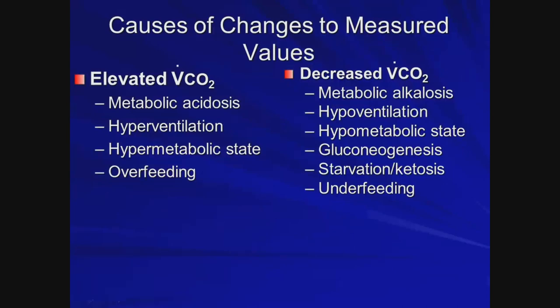Increased CO2 production occurs when you're in a hypermetabolic state producing more CO2. We also see this from overfeeding — using a standardized diet can lead to patients being fed more calories than they need, which is actually harmful. Too much carbohydrate can worsen an acidotic state if the patient can't ventilate off the excess CO2. Reduced CO2 production would be the opposite situation, seen in starvation.